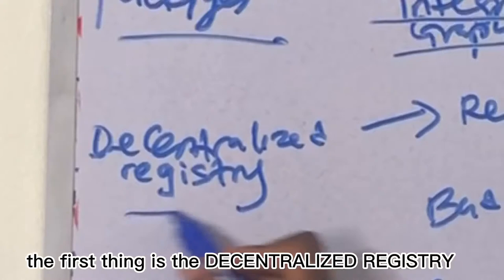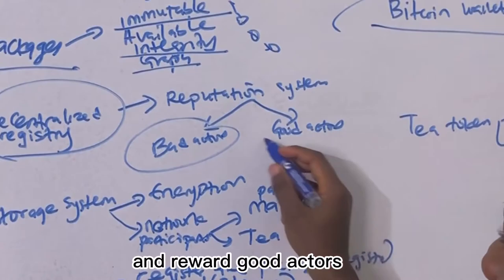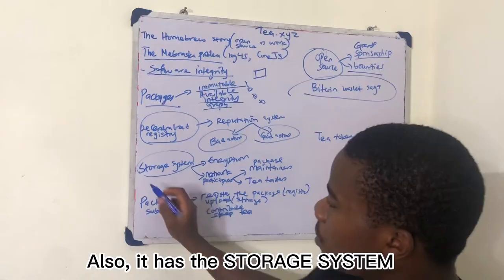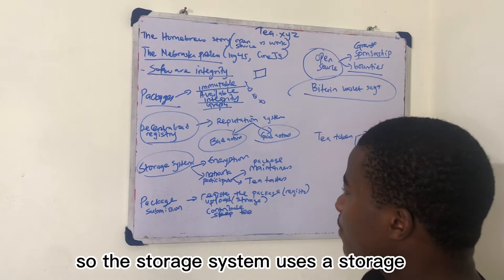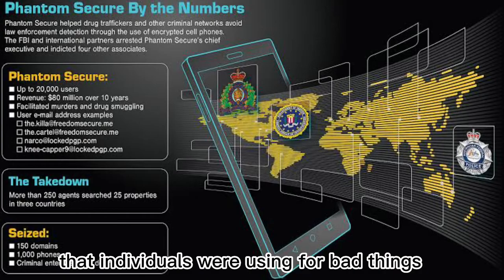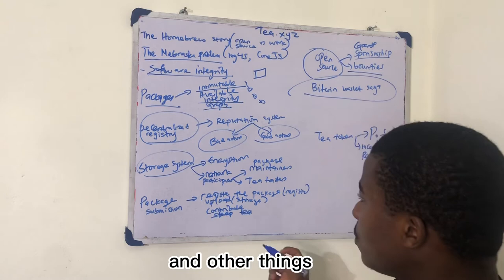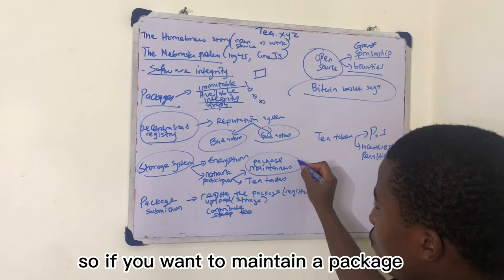So let's talk about a little bit about the project. The first thing is the decentralized registry. The decentralized registry consists of a reputation system where it punishes bad actors and rewards good actors. And then it has the storage system. So the storage system uses a storage that is permanent. Now encryption is a very good thing, but individuals can use encryption for a bad thing. We have the likes of Phantom Secure that individuals were using for bad things, and then we have government also using encryption for bad things.